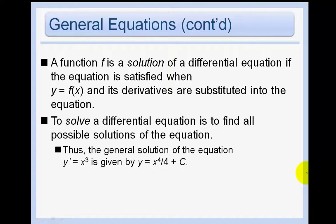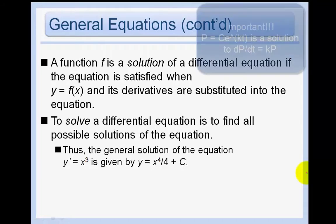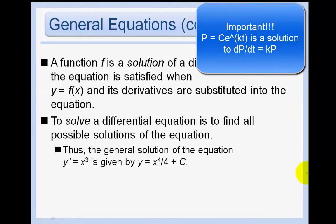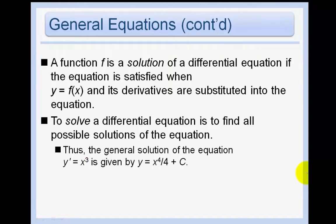We saw in the population growth model that p = ce^(kt) was a solution to dp/dt = kp. To solve a differential equation is to find all possible solutions of the equation. For example, the general solution of y' = x³ is given by y = (1/4)x⁴ + c.